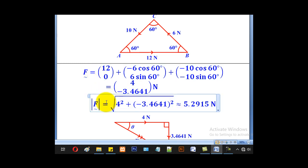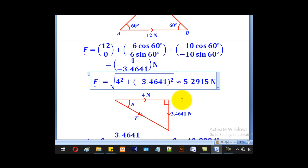But remember, they wanted magnitude and direction. So come and get the magnitude of this vector, 4 squared plus negative 3.4641 squared. Everything under root will give you 5.2915 N. So that will be the magnitude of the resultant force.